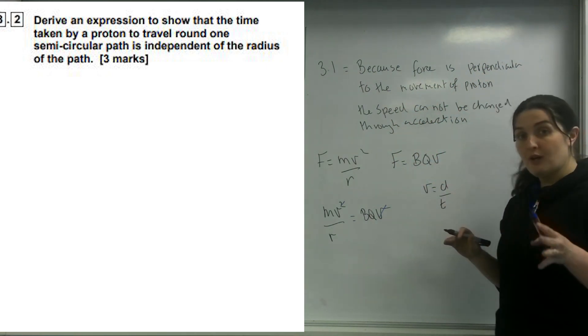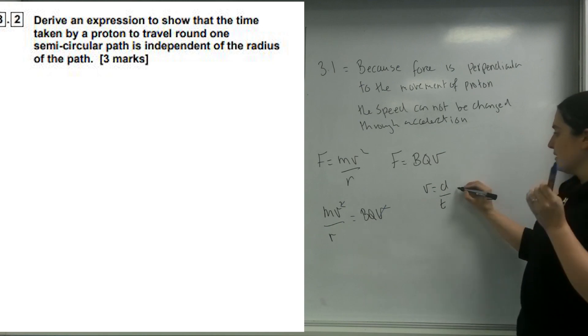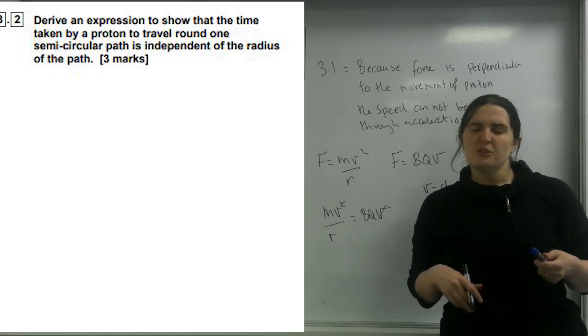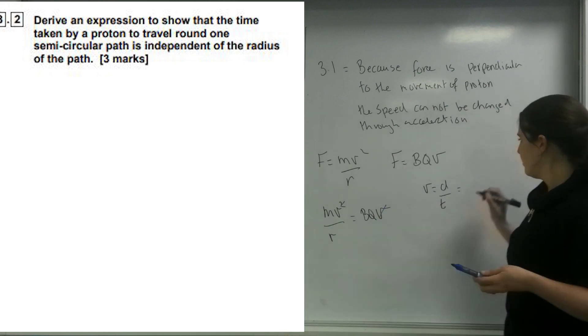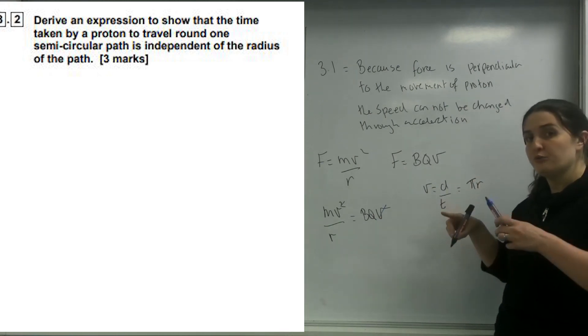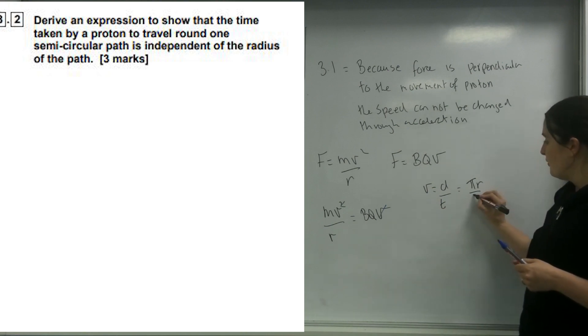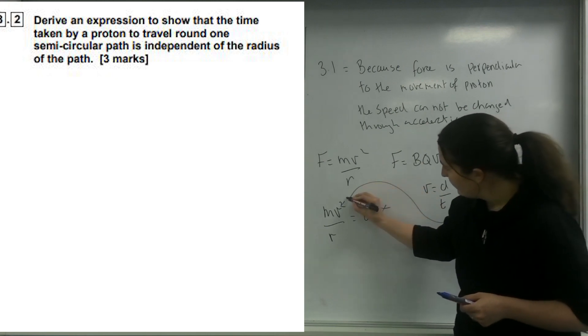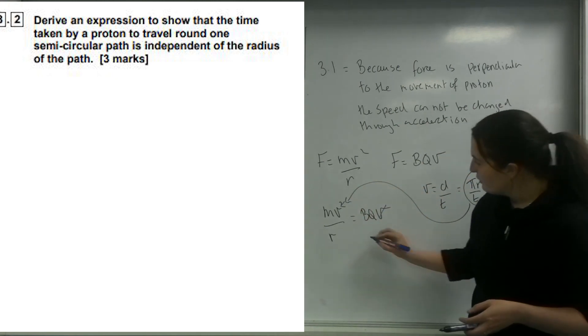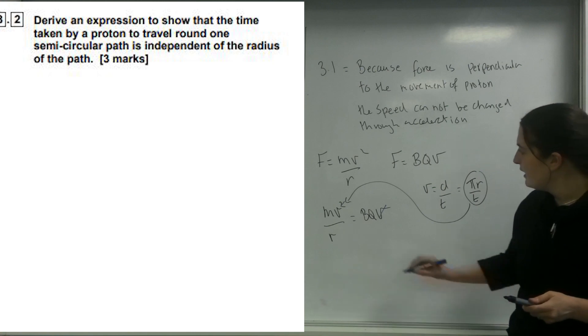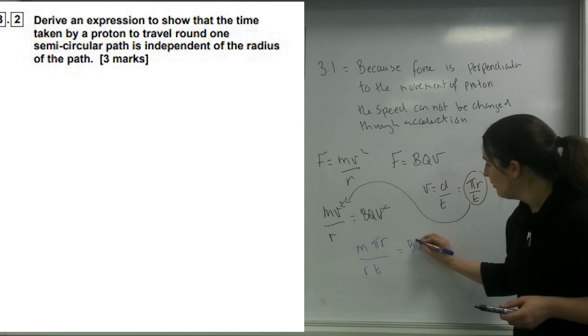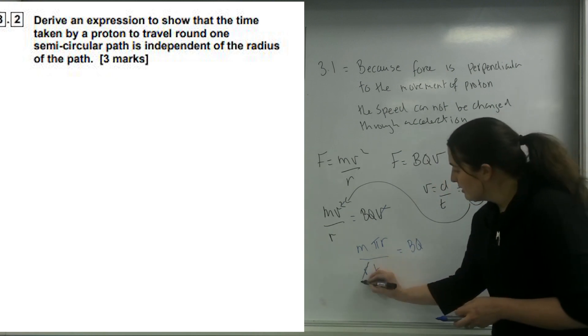The circumference divided by 2 because it's a semicircle, so this is going to be just πr. So 2πr divided by 2 is πr over time. I'm going to put that formula all the way into this here. What I end up with is m times πr over rt equals bq and the r's cancel.